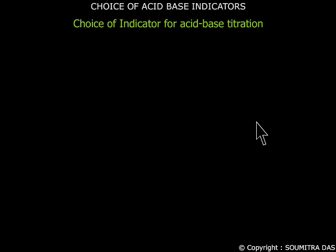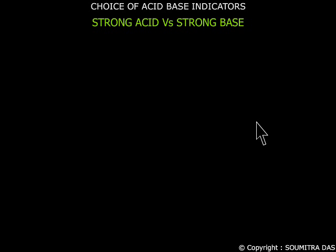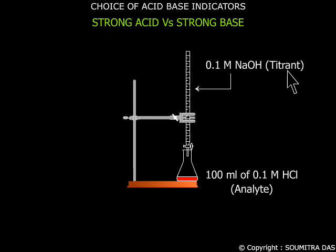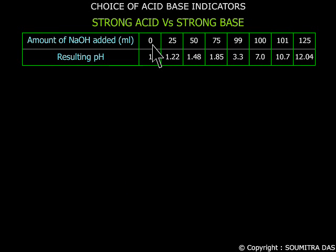Choice of indicators for acid-base titrations. Strong acid versus strong base: take 100 ml of 0.1 molar HCl in a conical flask and titrate it with 0.1 molar NaOH solution, which is called the titrant. These are the volumes of NaOH added in ml during titration and these are the resulting pH.